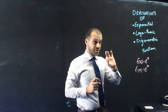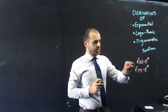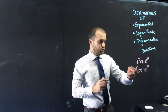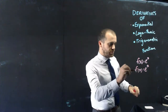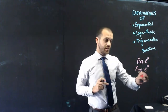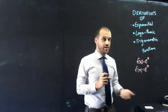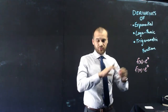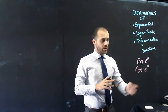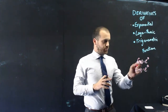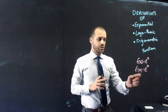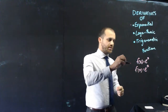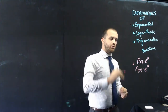We're doing exponentials first because it's the easiest. If f of x equals e to the x, then the derivative f dash of x equals e to the x. That's the special thing about the number e - the derivative is equal to the original function. So there's our first little rule.